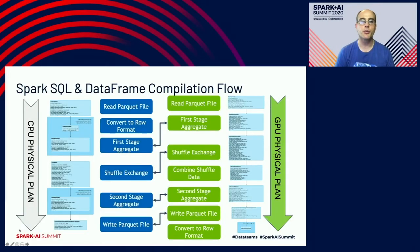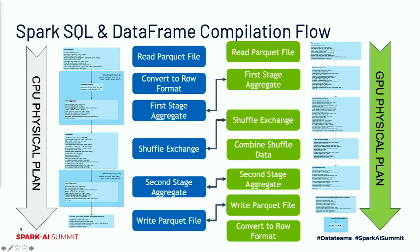Here's a simple query laid out with CPU on one side and GPU on the other — a very simple hash aggregate. We read in a Parquet file in both cases. Since Parquet is a columnar format, the data is already columnar so no row transition is needed initially. On the CPU side, after reading the columnar data, it needs to convert it into rows to do the rest of the processing. On the GPU side, we skip that and go directly into a GPU-enabled stage of hash aggregate.